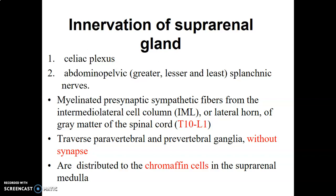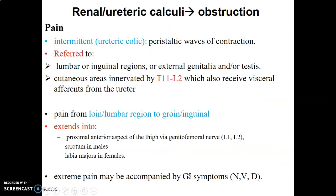The presynaptic fibers originate from the lateral horn of the spinal cord at T10 to L1, then enter the paravertebral and prevertebral ganglia without synapsing there. From there they go straight to the chromaffin cells of the adrenal medulla to cause them to produce catecholamines. So presynaptic fibers move from the lateral horns at T10 to T11 through the para- and prevertebral ganglia without synapsing, directly to the chromaffin cells of the medulla.